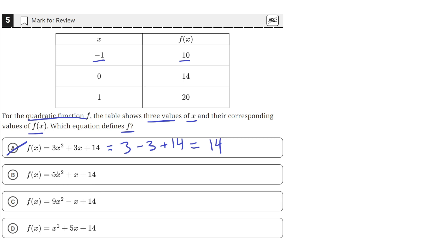If we plug in negative 1 into the second equation, negative 1 squared is just 1, so this just gives us a 5, and minus 1 plus 14. This is equal to 4 plus 14, which is equal to 18. So B is also incorrect, since it doesn't give us a value of 10 when we plug in negative 1.